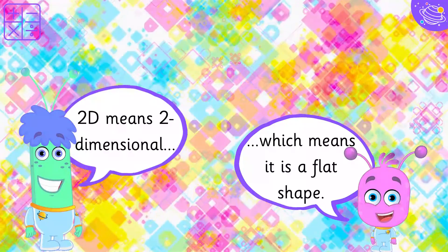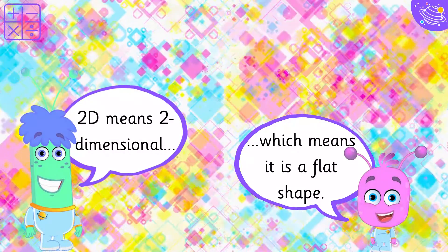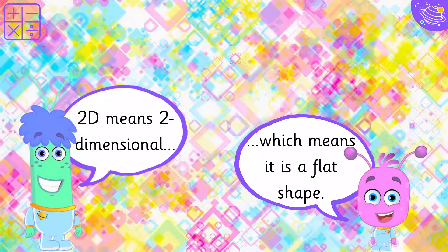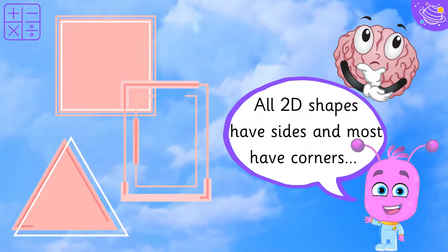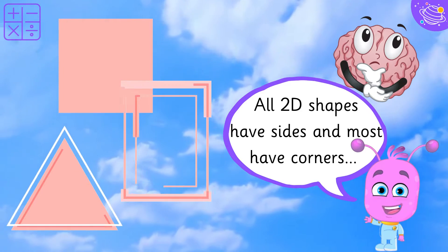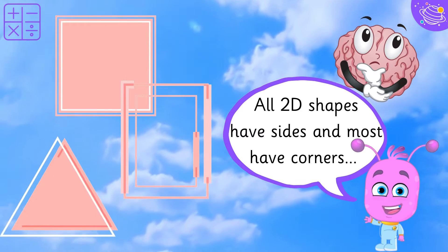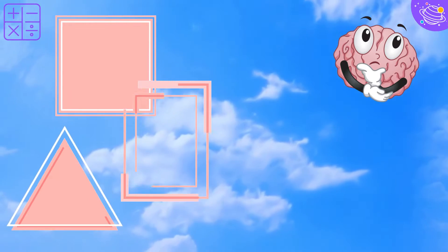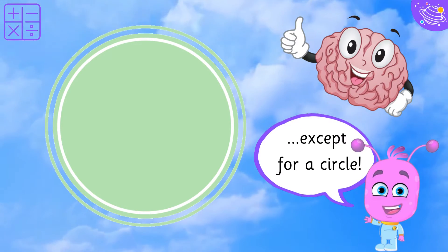2D means two-dimensional, which means it is a flat shape. All 2D shapes have sides and most have corners, except for a circle.